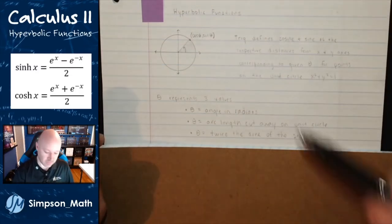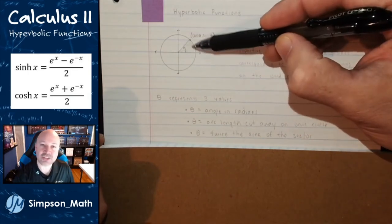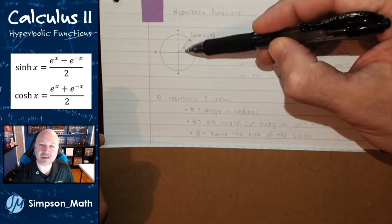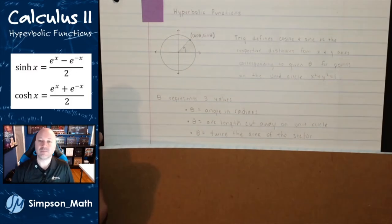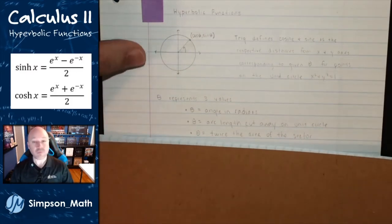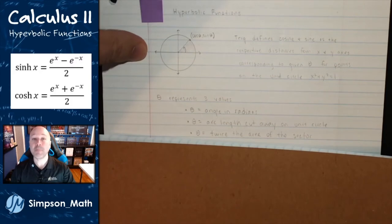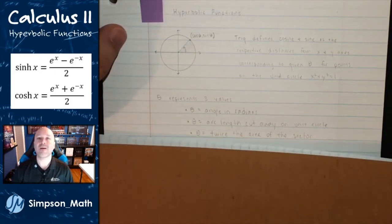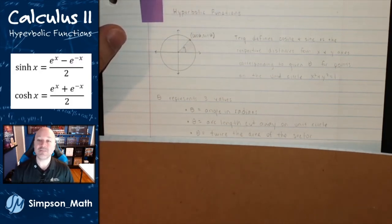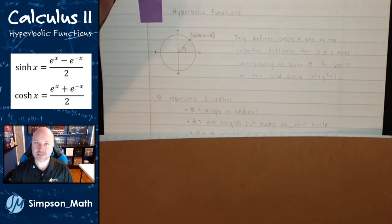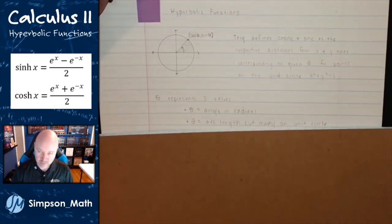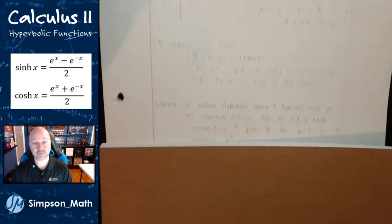And then also that sector — the shaded area here — twice that area equals theta. So we played around with that in trig. The hyperbolic functions are very similar, but instead of using a unit circle, we use a unit hyperbola to define hyperbolic cosine and hyperbolic sine.